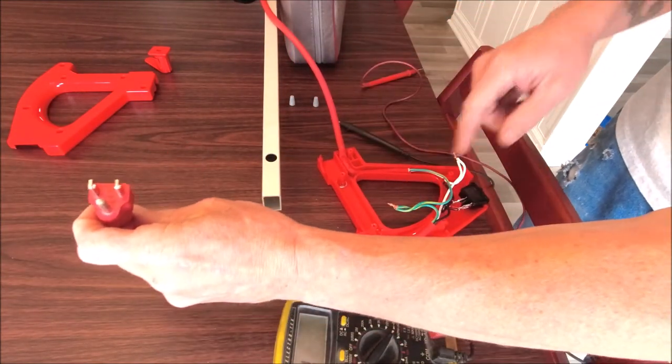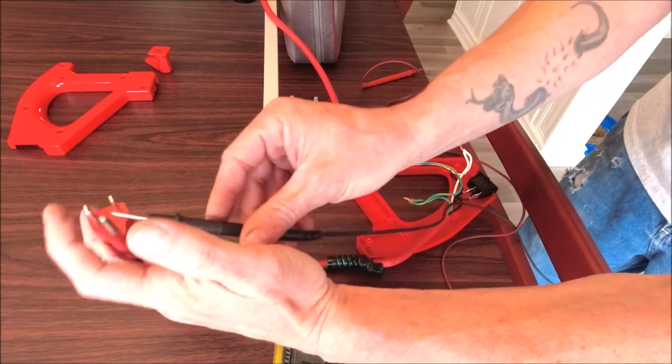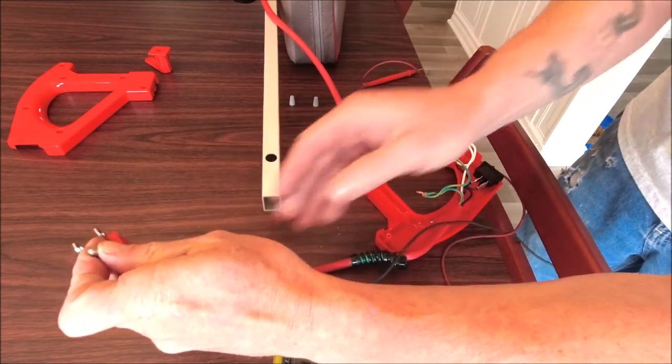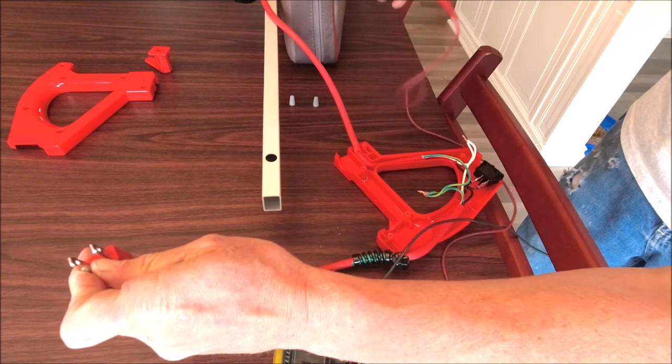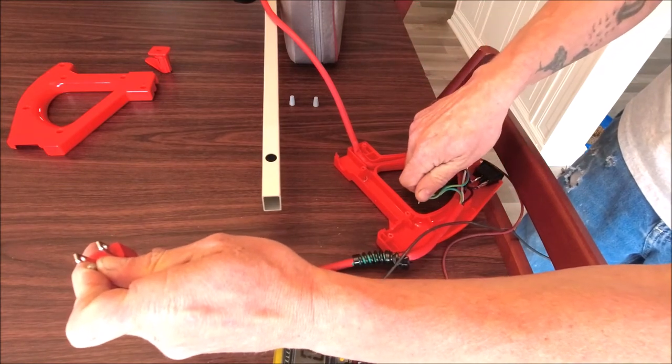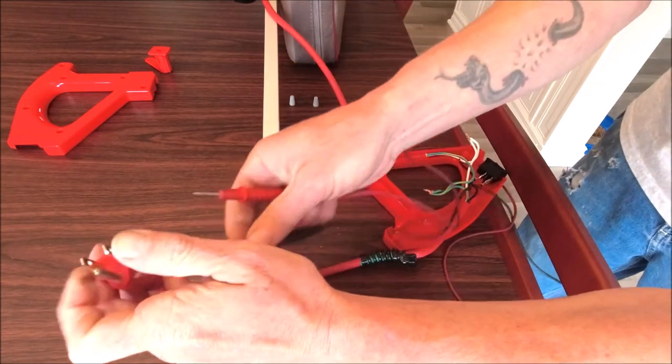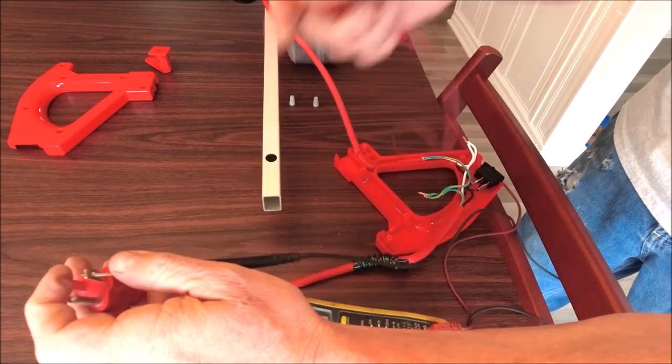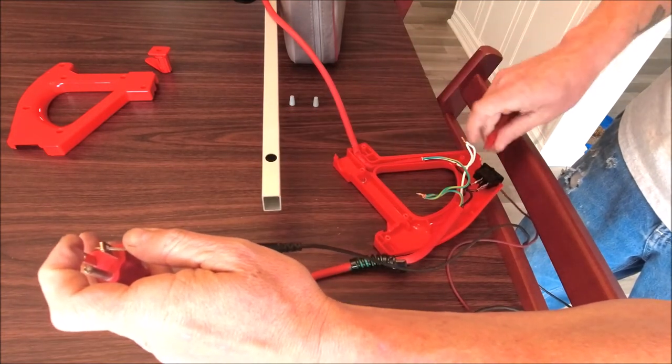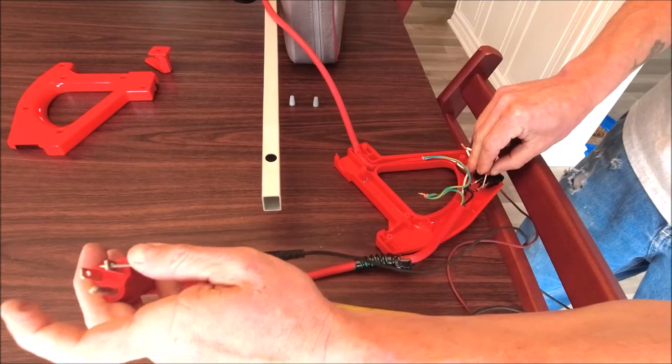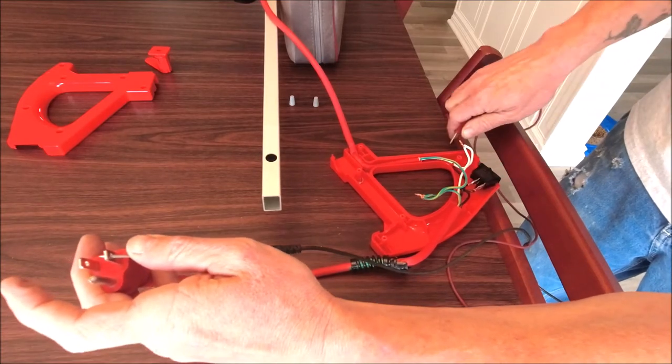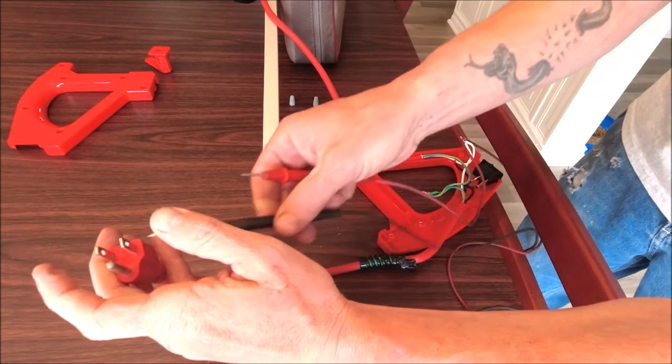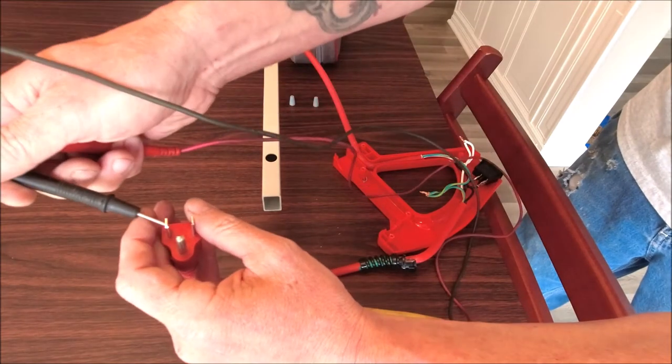This big one is the ground, which is the green. We're going to put one lead of our meter to that ground. Our ground wire is good. So we'll take one of the probes over here. I don't have anything on either of the other leads, on the neutral or the hot lead. So let's switch sides.